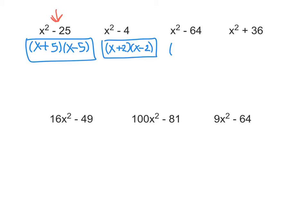These get really quick and easy because we get used to the pattern in this shortcut. x times x is x squared. 8 times 8 is 64. It is a subtraction sign in the middle. So we can put a plus in one and a minus in one, and it is done.